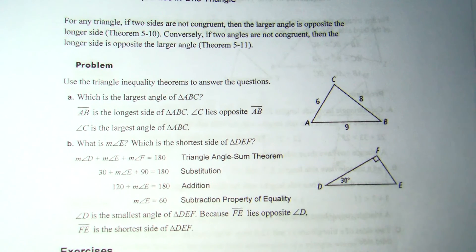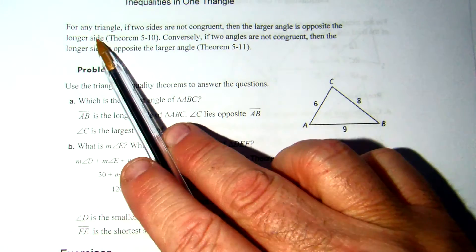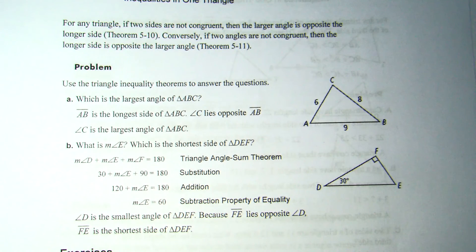You use the triangle inequality theorem. The triangle inequality theorem starts with this: the larger angle is opposite the longer side. Conversely, if two angles are not congruent, the longer side is opposite the largest angle.